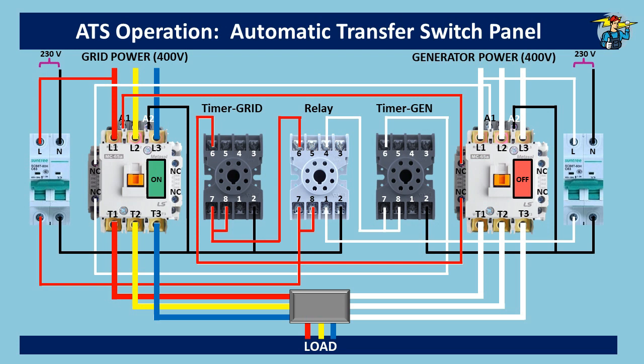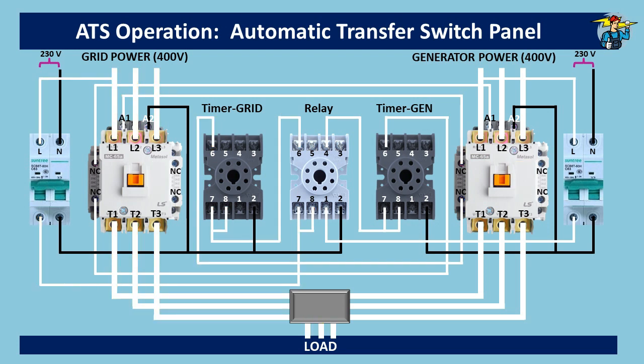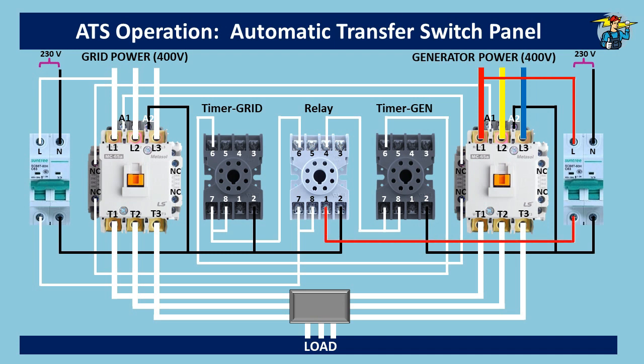Now let's see what happens when grid power is interrupted. Generator auto-starting is not included here and will be discussed in a separate video, so we need to start the generator manually. Three-phase power will then be available at L1, L2, and L3 of the generator contactor. The control circuit breaker on the generator side allows power to common port 1 of the relay. The line to port 7 is still energized and the relay is not powered yet.